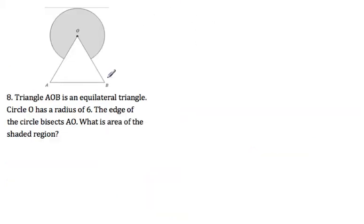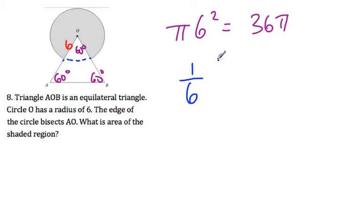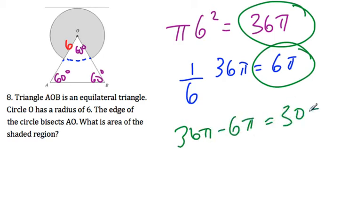Circle O has a radius of 6, and this is an equilateral triangle, meaning all angles are 60 degrees. The area of the whole circle is pi times 6 squared equals 36 pi. But we don't have the whole circle — we're missing a slice, which is one-sixth of 36 pi, equaling 6 pi. So 36 pi minus 6 pi equals 30 pi.